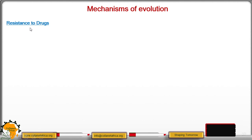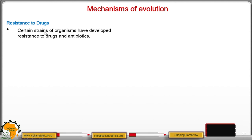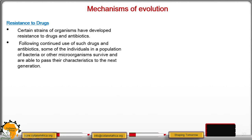We will wind up with resistance to drugs. Certain strains or types of organisms have developed resistance to drugs and antibiotics and cannot be eliminated by them. Following continuous use of such drugs and antibiotics, some individuals in a population of bacteria or other microorganisms survive and are able to pass their characteristics to the next generation.